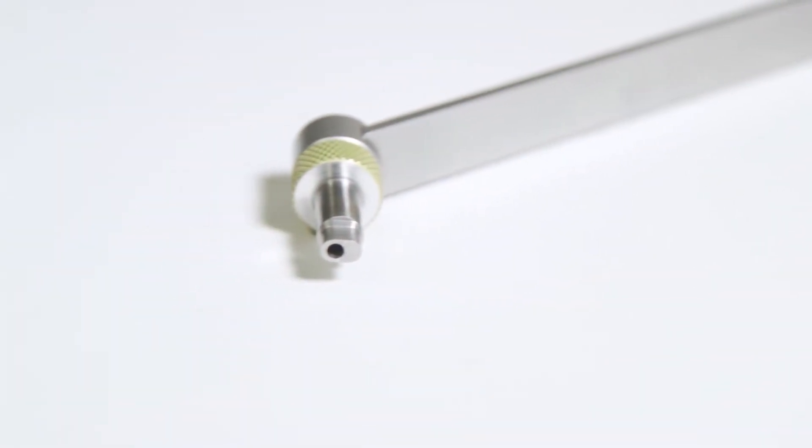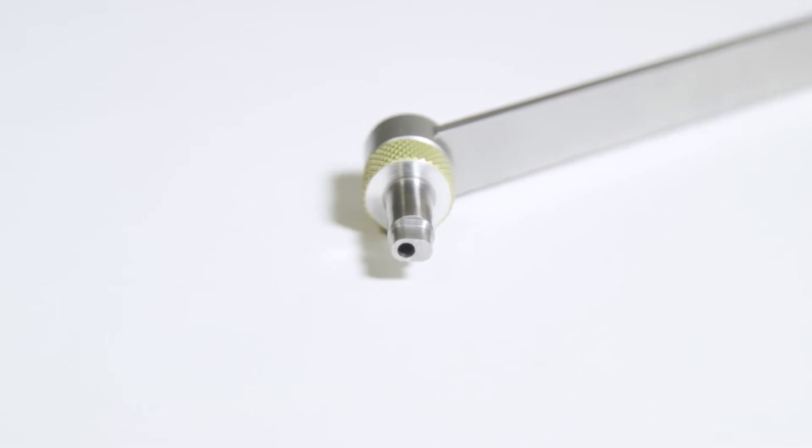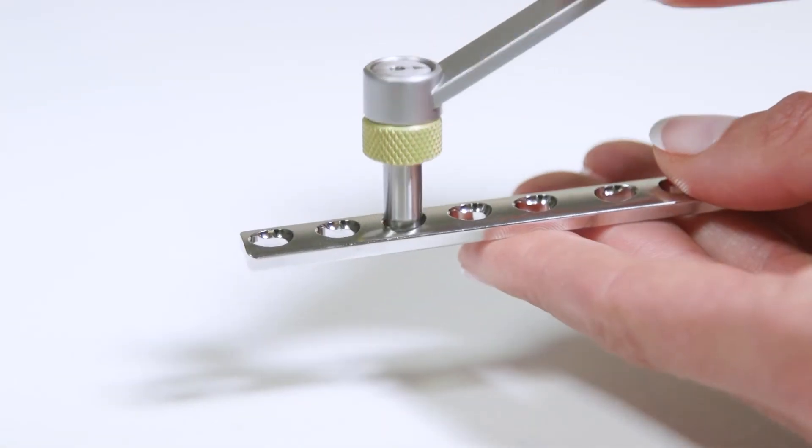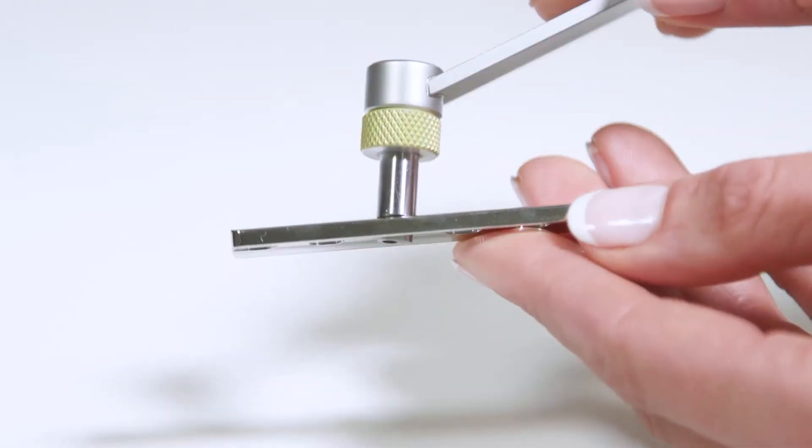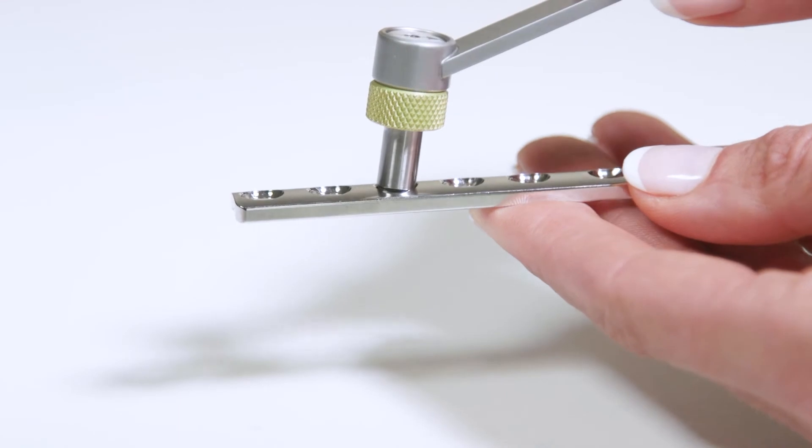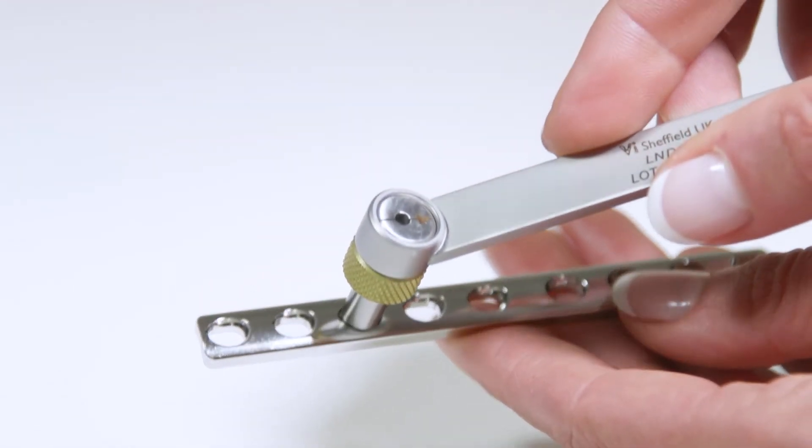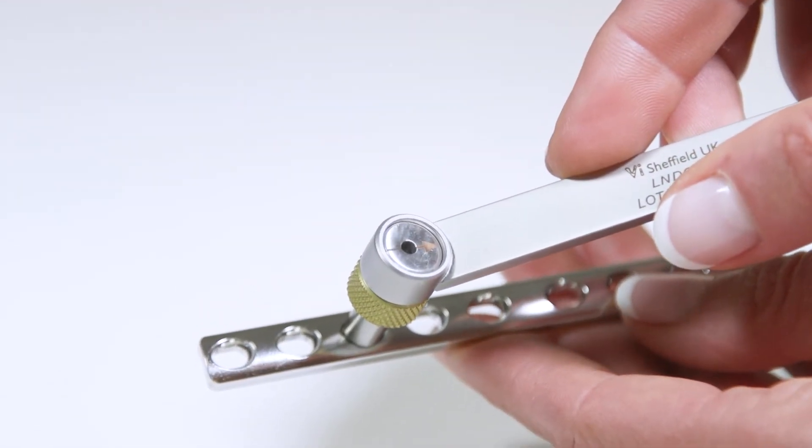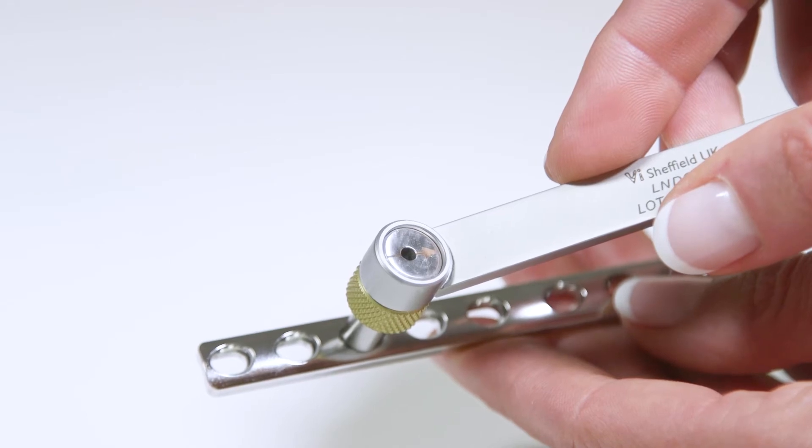One end of the Load Neutral Drill Guide has an offset hole. The tip of the device is positioned to create the pilot hole at the far end of the oval plate hole, away from the fracture. The arrow is positioned so it points towards the fracture. This ensures correct offset positioning of the pilot hole.